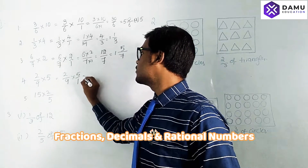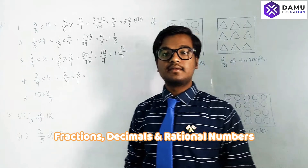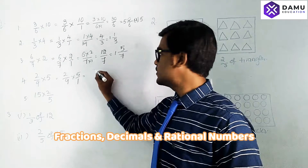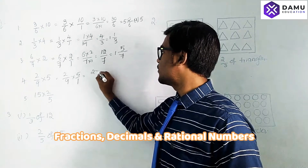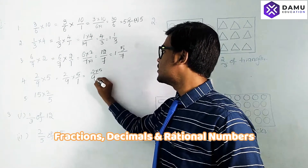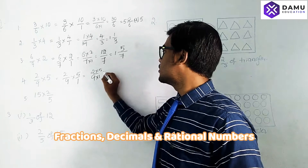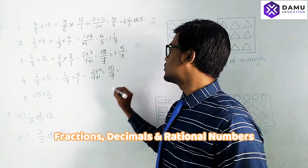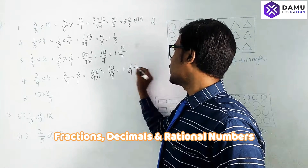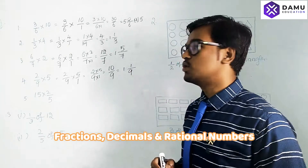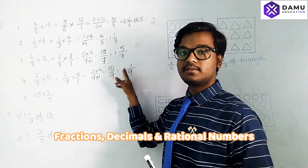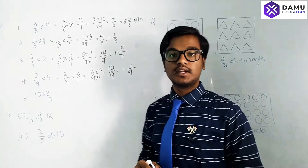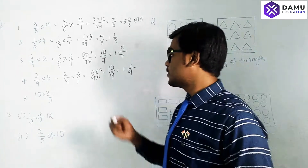Next: 2/9 × 5. Write 5 as 5/1. Product of numerators: 2 × 5 = 10, denominators: 9 × 1 = 9, giving 10/9. To express as a mixed fraction: 9 × 1 = 9, and 9 + 1 = 10, so 10/9 = 1 and 1/9.